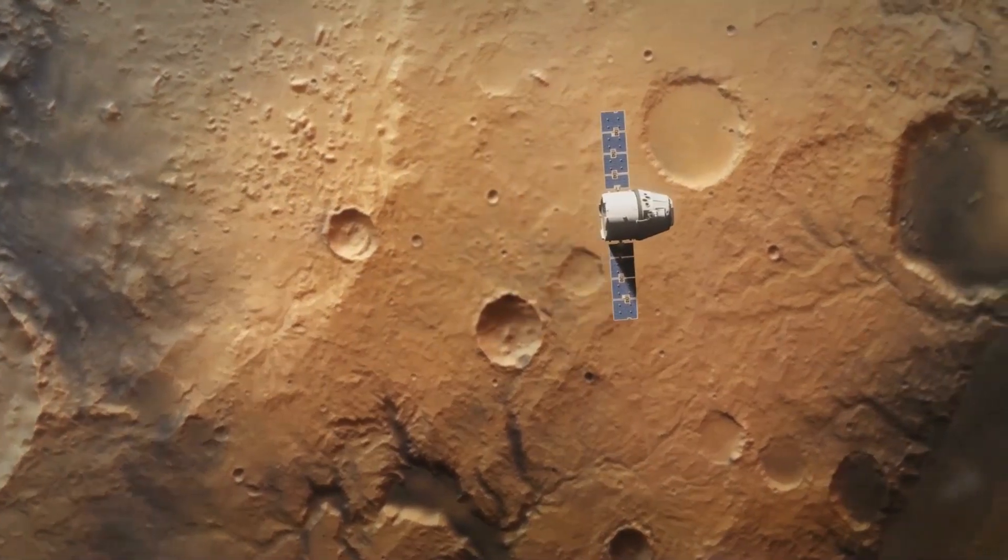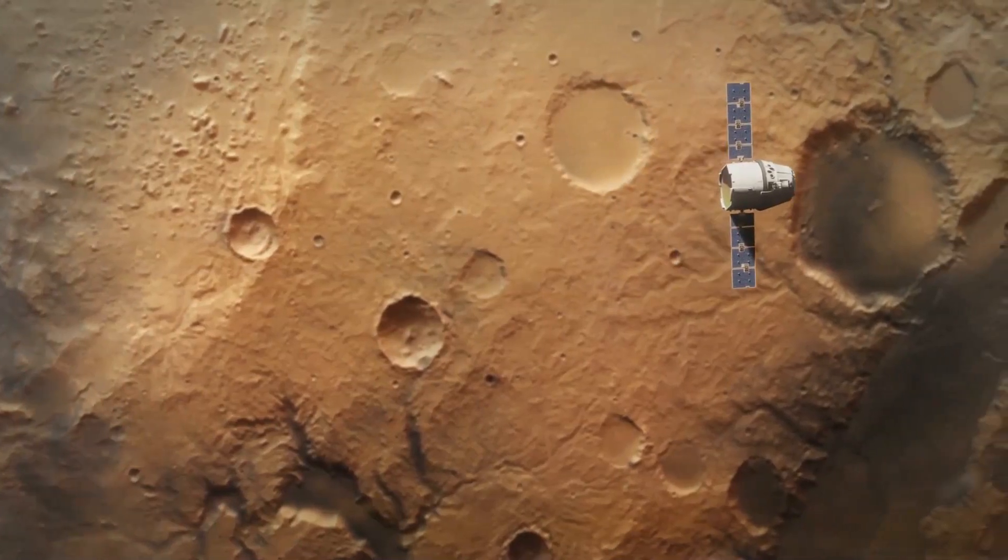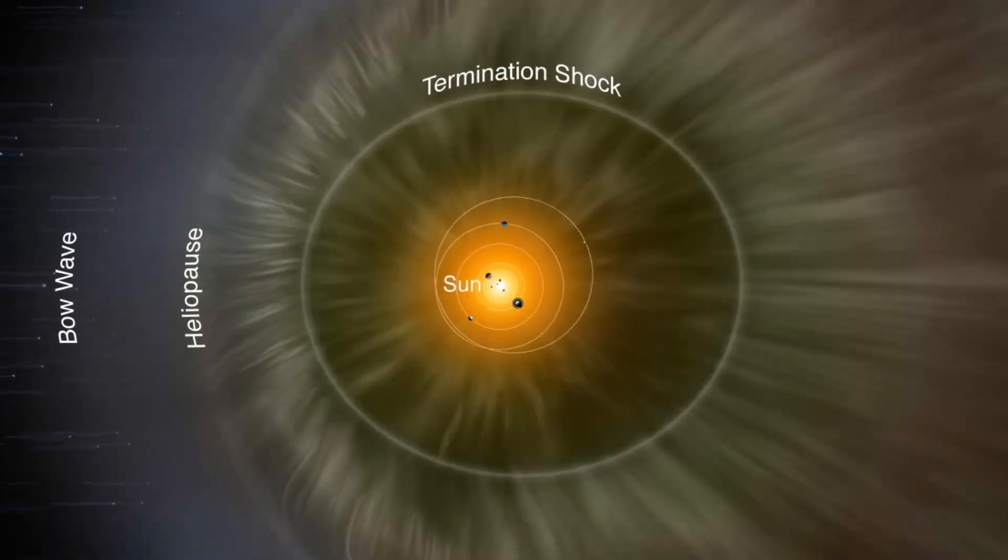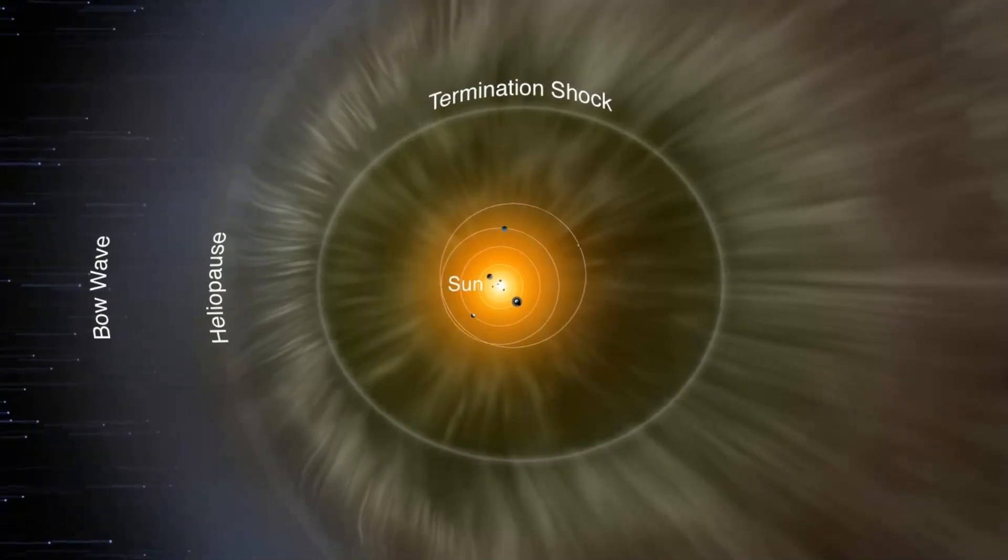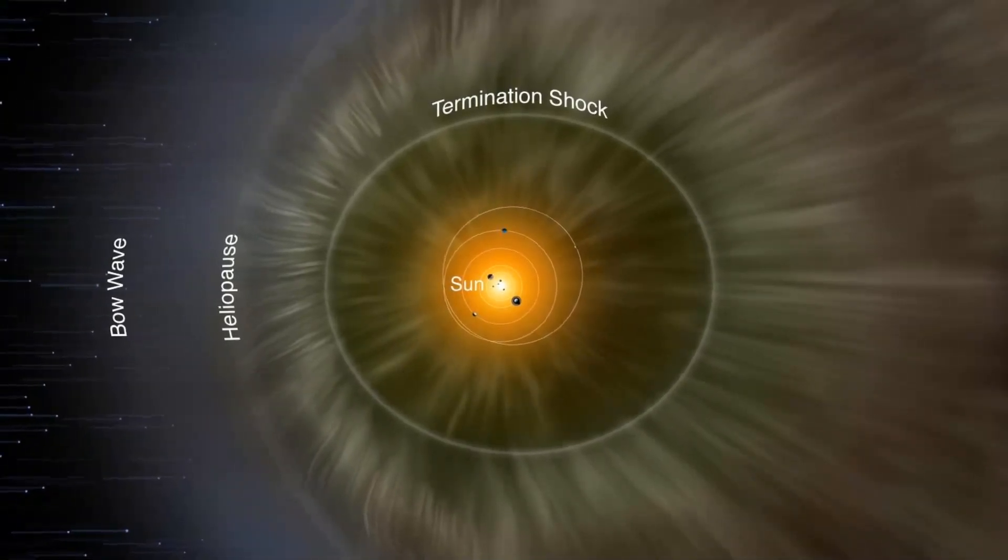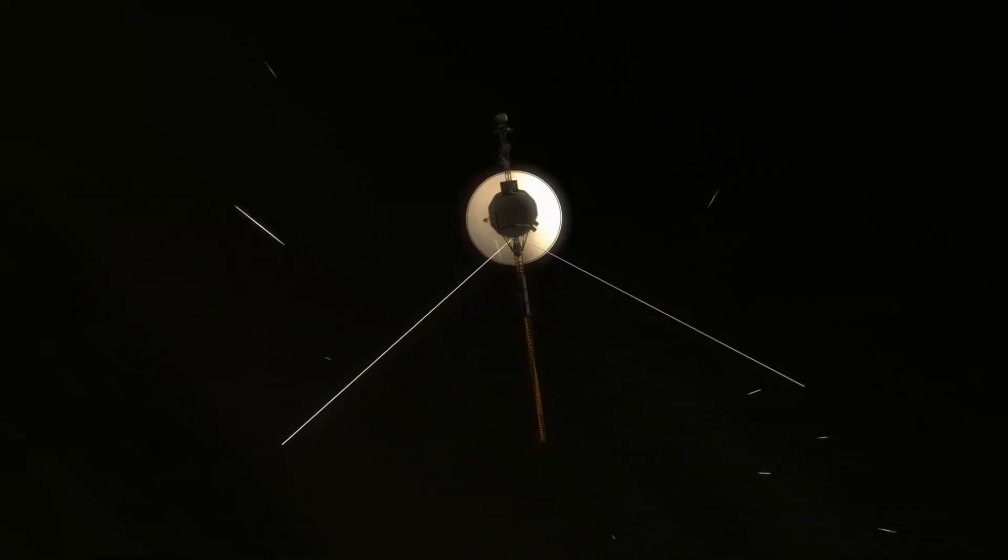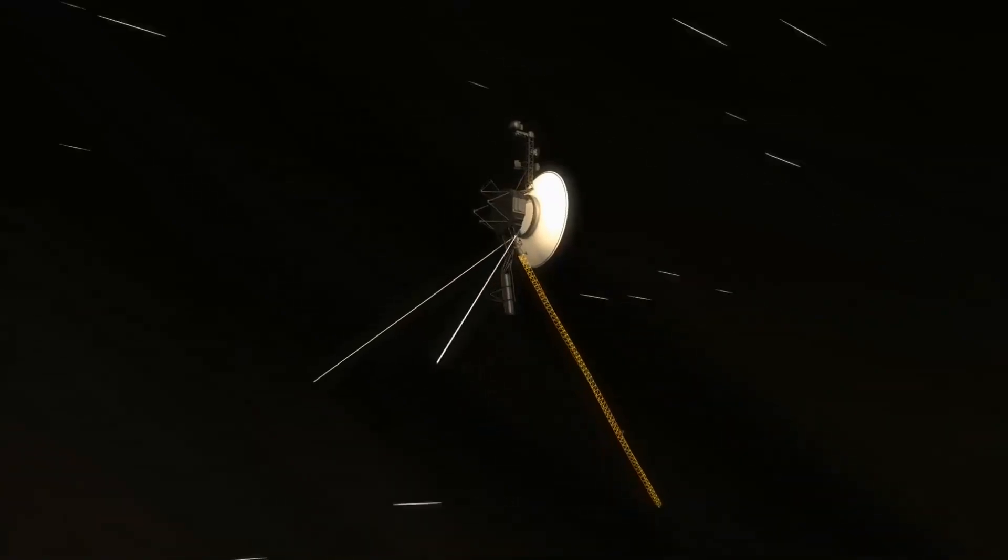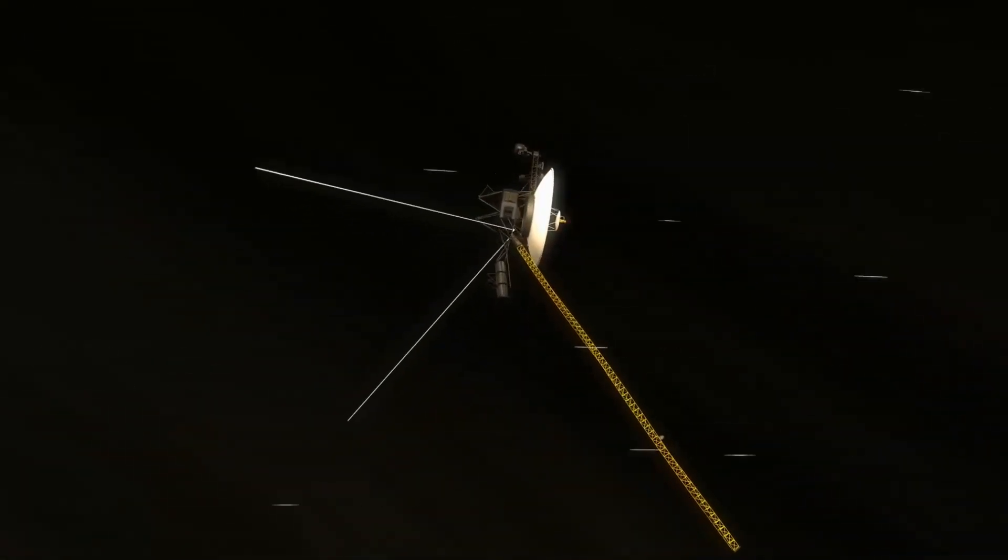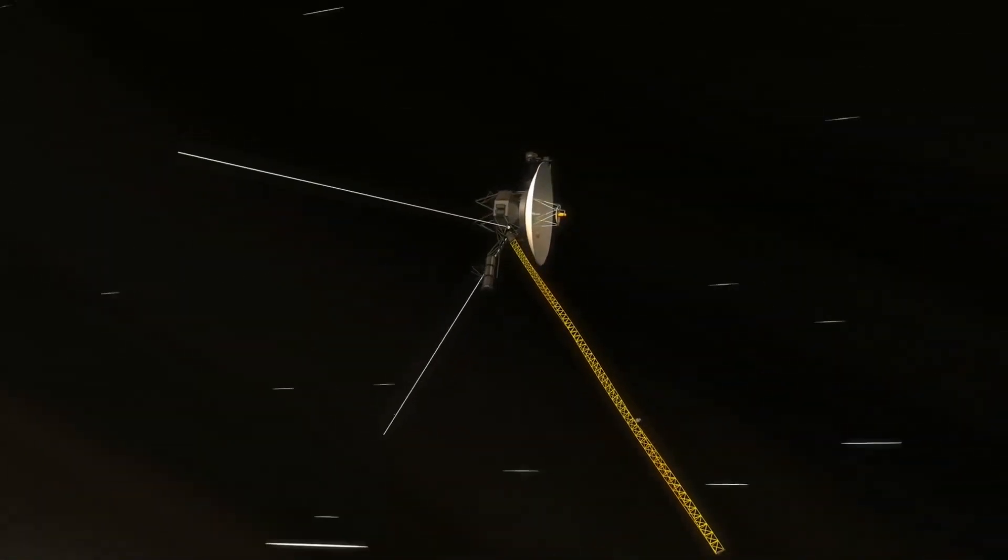Voyager 2's exit from the interstellar bubble was not without surprises. According to the data, the bubble was found to be very leaky. This is because the material from the solar bubble was discovered out in interstellar space. Voyager 1 had found signs of a leaky bubble as well. In that instance, however, interstellar material was found streaming into the bubble. This is the opposite of what Voyager 2 discovered.